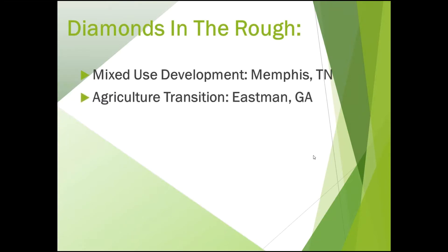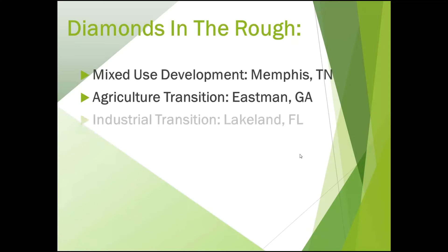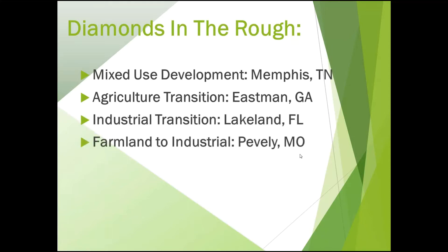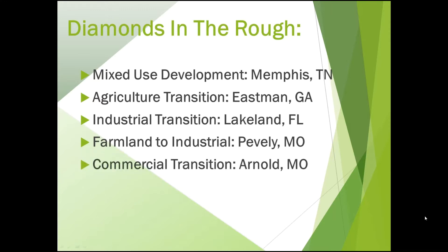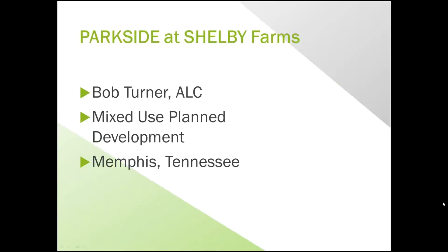Today, we're going to talk about five different case studies. We're going to look at a mixed-use development in Memphis that Bob will talk about. Ben will be talking about an agricultural transition project in Eastman, Georgia, and an industrial transition project in Lakeland, Florida. And then Norma will be talking about two Missouri projects — both a farmland to industrial and a commercial transition project. And without further ado, I'll introduce Bob Turner to talk about his Memphis mixed-use project.